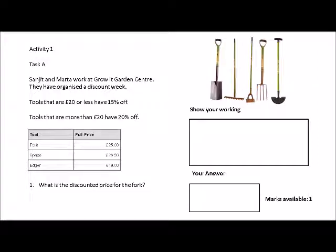Part of the question is being able to understand and differentiate between the two percentages of offers. Tools that are £20 or less have 15% off, and tools that are more than £20 have 20% off. Part of it is understanding 'less' and 'more'. The fork is £25, so that would be more than £20 — so that would be 20% off.